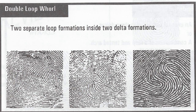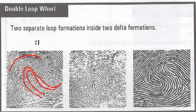The third type of whirl is referred to as a double loop whirl. I define these as simply two separate loop formations inside two delta formations. What I mean by this is if you can recognize this looping pattern here — it's quite easy to see the ridges are curving, recurving, and coming back to that side. But we also have another looping formation. Let's do that in blue. You see now I have a secondary loop formation, a looping formation.